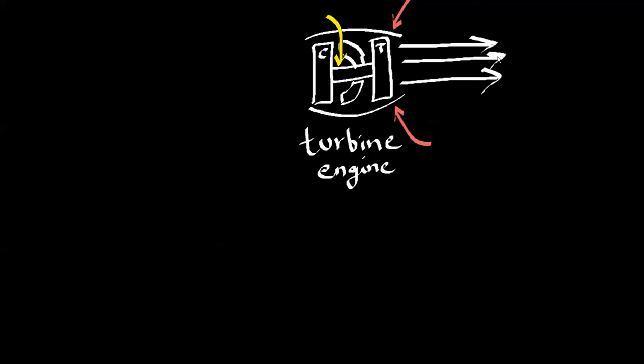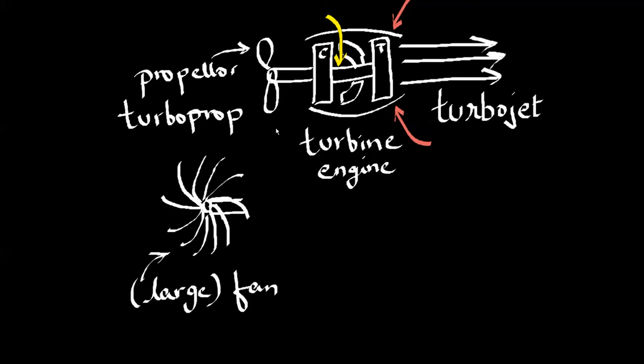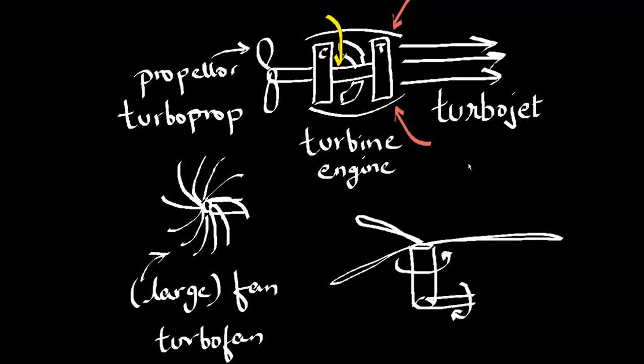Now, if you use the gases, the exhaust gases by themselves to propel the aircraft, this is your basic turbojet. If you, however, put a shaft in front of the turbine engine and attach a propeller, then this is your turboprop engine. Instead of a propeller, if you attach a large fan, this becomes your turbofan engine. Instead of putting a prop or a fan, however, if you put another shaft, you gear it up and attach large blades to it, you have a helicopter, which is your basic turboshaft engine.